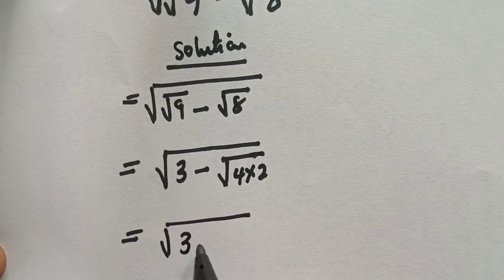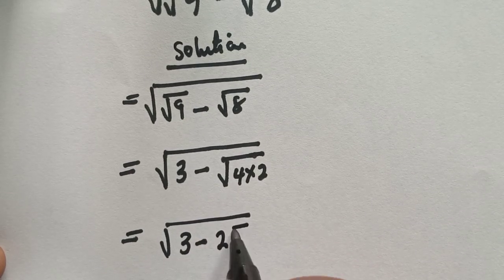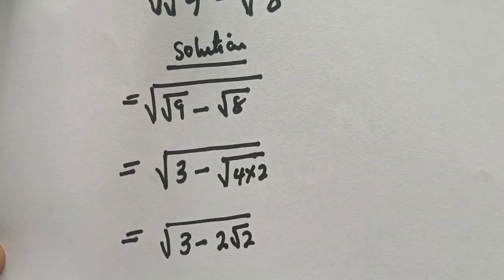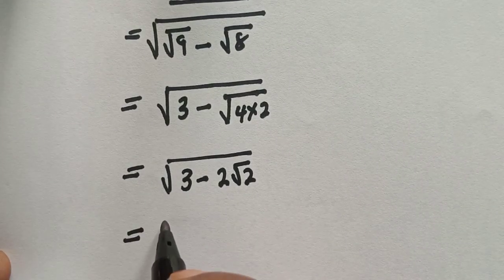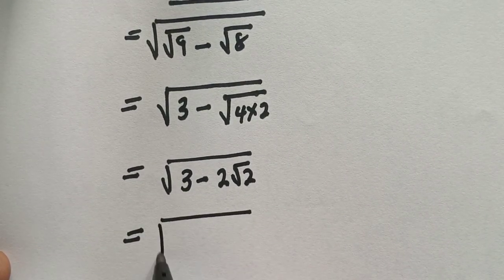3 minus root 4 is 2 root 2. And this is equal to square root of 3 can be written as...